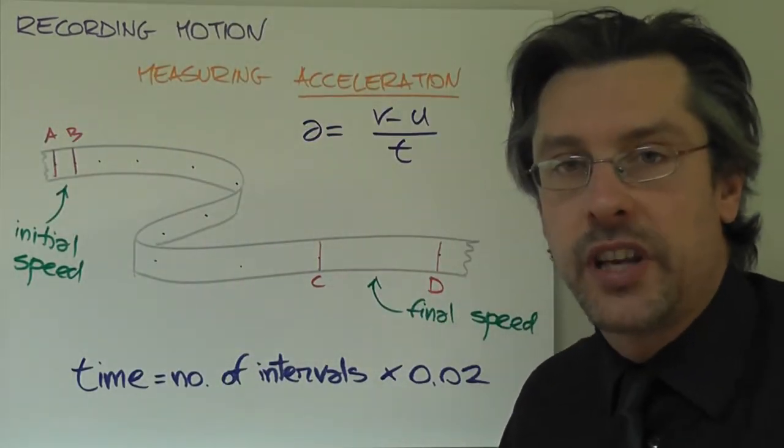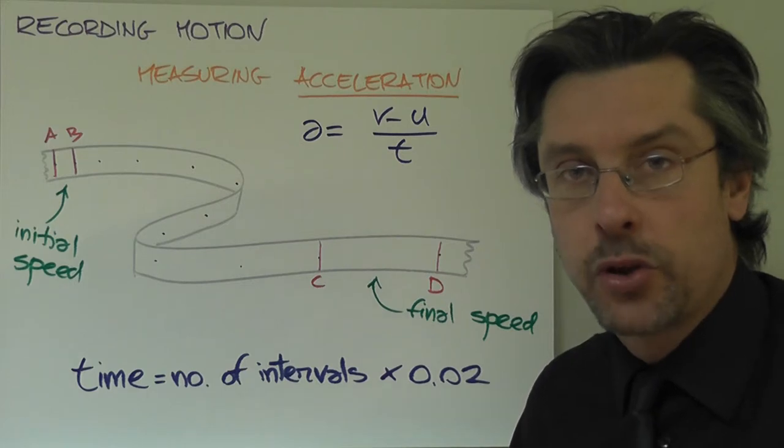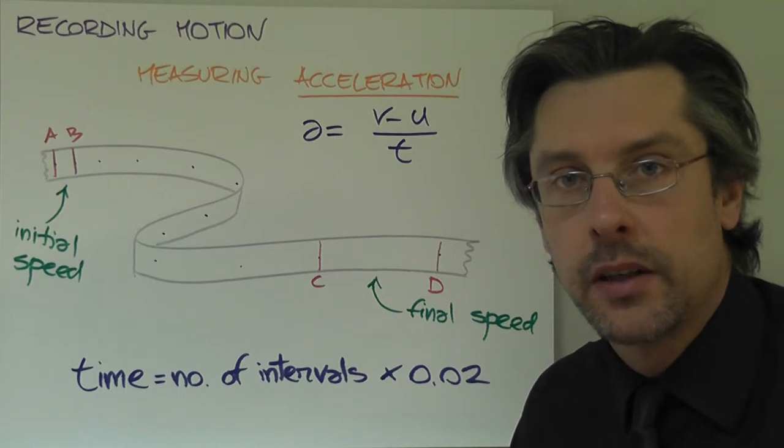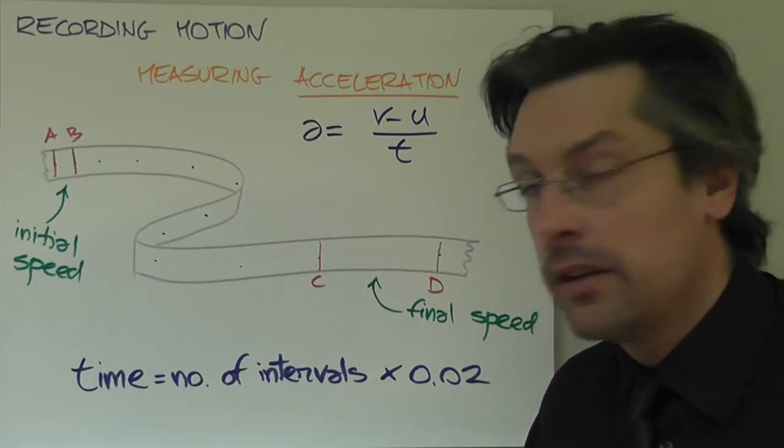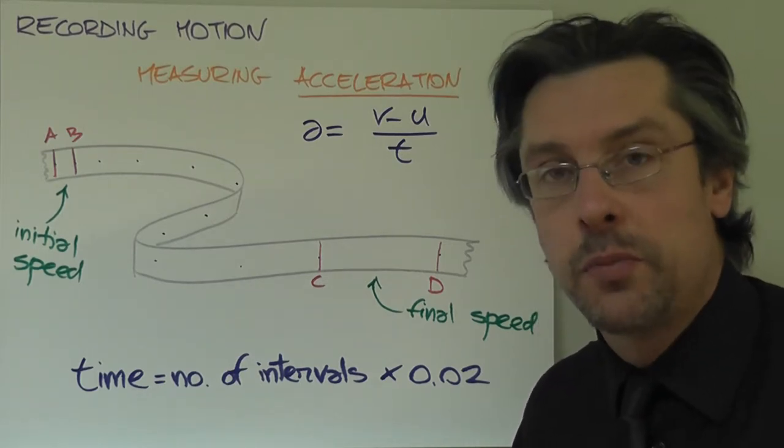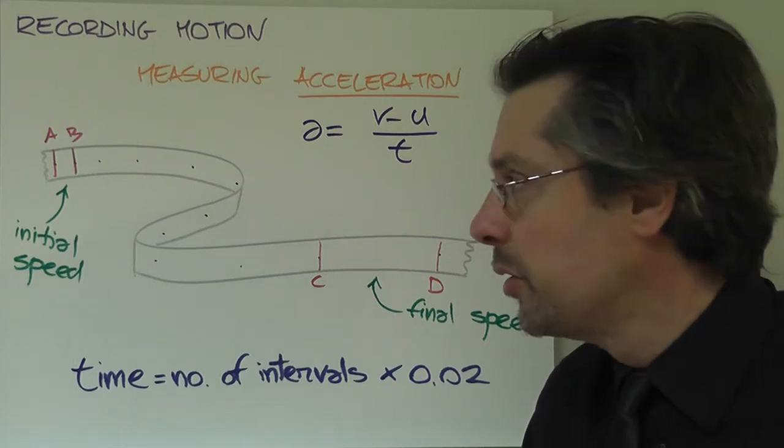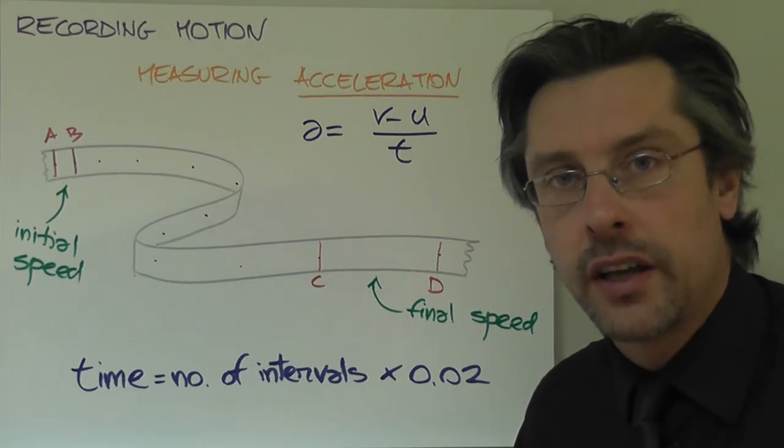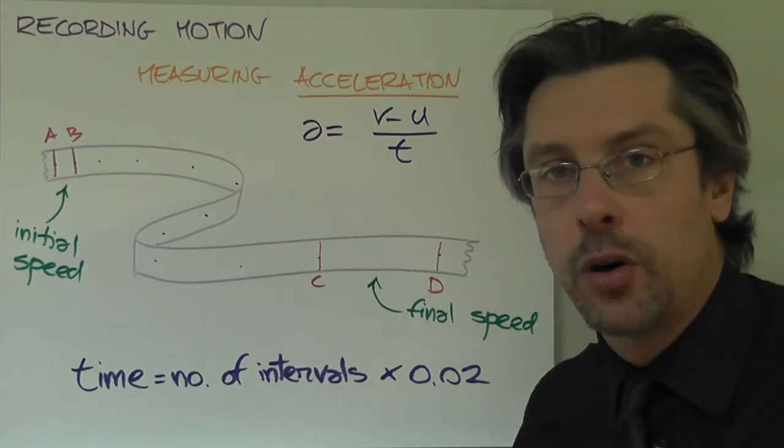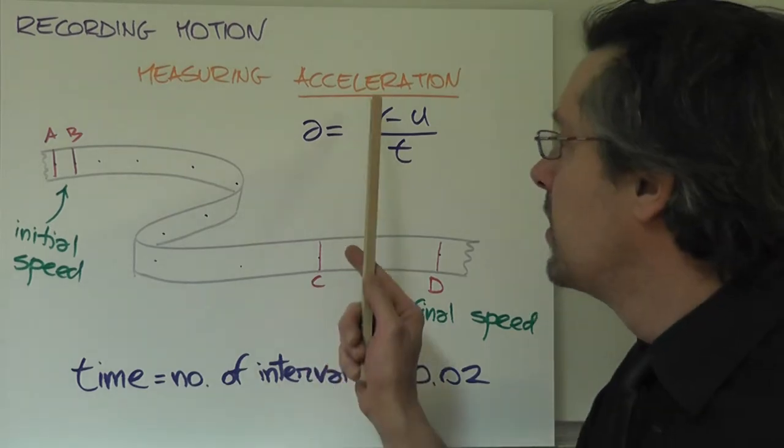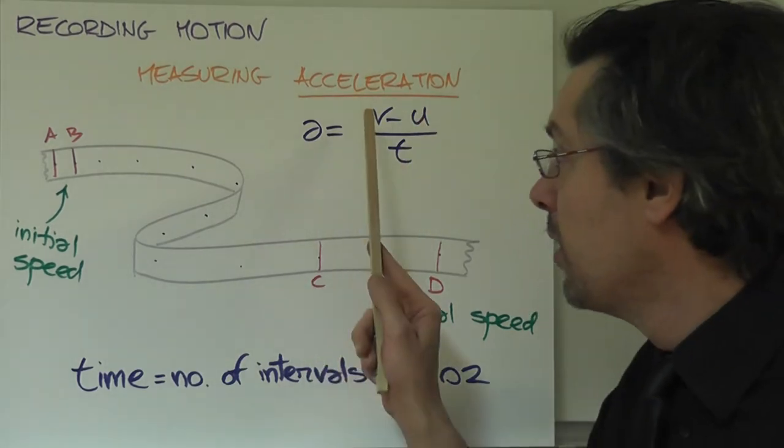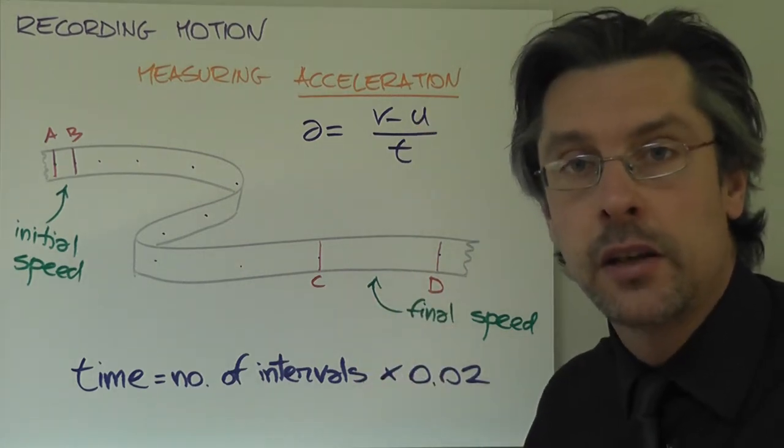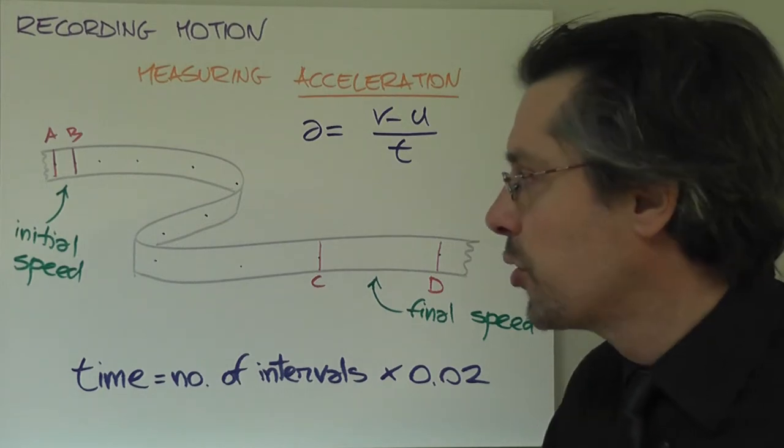So far we've seen how we can record the motion of an object, we can find the time traveled, the distance and the speed. But at the end what we want to find, and this will be the purpose of a lab that we're going to carry out soon, will be to find the acceleration of our trolley. Now you must remember that the formula for acceleration is the change of speed, so final speed minus initial speed divided by the time taken over which we're recording our motion.